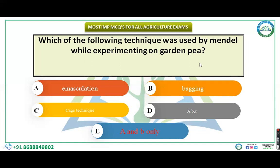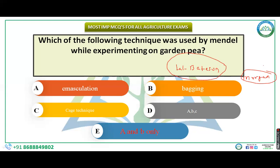Mendel is known as the father of genetics. W. Bateson is known as the father of modern genetics. Morgan is known as the father of experimental genetics. Mendel did his experiment on Pisum sativum, also known as the garden pea.